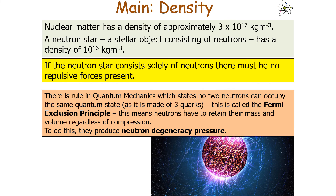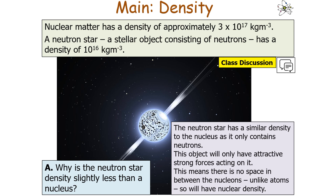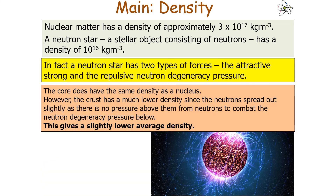To resist compression, neutrons produce a neutron degeneracy pressure, preventing the star from collapsing to a point. The neutron star's average density is slightly less than that of the nucleus because, while the core has the same density as a nucleus, the crust of a neutron star has a much lower density since the neutrons spread out slightly — there is no pressure above them from other neutrons to combat the neutron degeneracy pressure beneath them. This gives a slightly lower average density, which is why it is slightly less than 10¹⁷ kg/m³.